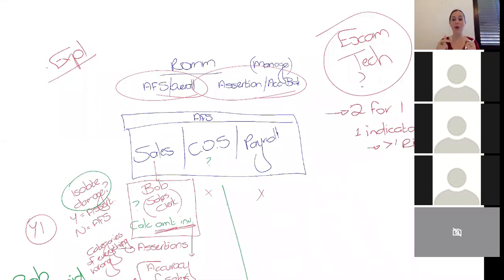Bob is stupid. It's going to impact the accuracy of sales. It's also going to impact the completeness of sales. And it's going to impact the accuracy of cost of sales. Right? So, in terms of gathering marks, don't go one risk equals one impact. Make sure that you break it down.